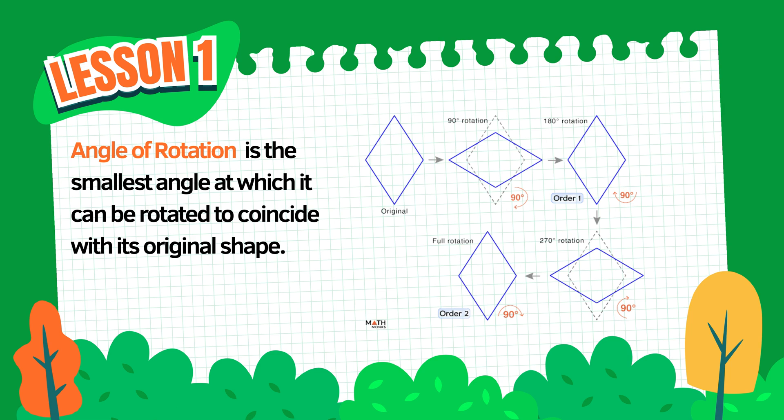That means when we rotate the rhombus by 180 degrees, it looks exactly the same as it did at the beginning. So remember, the angle of rotation tells us the smallest turn a shape can make to land back on itself. And for a rhombus, that angle is 180 degrees.